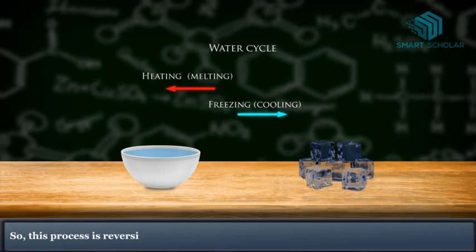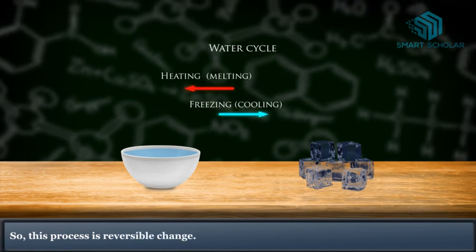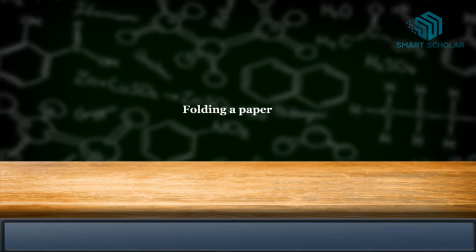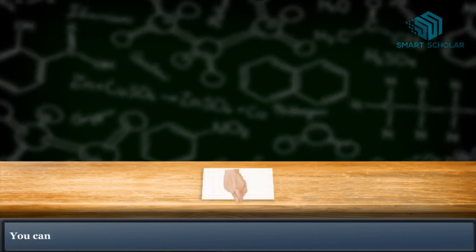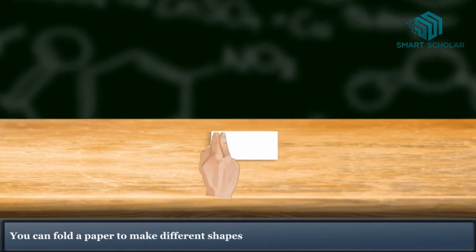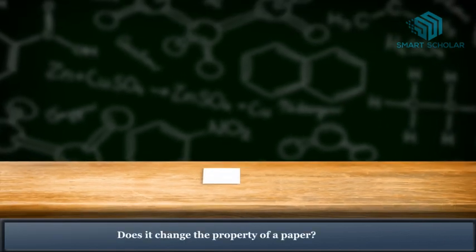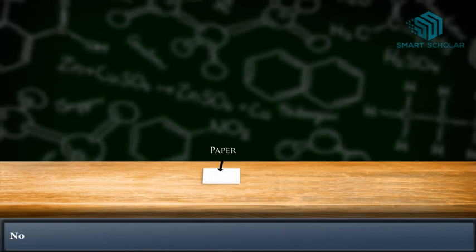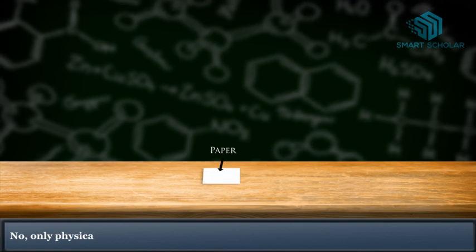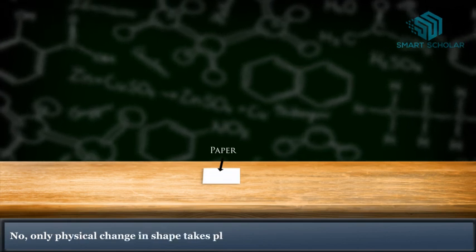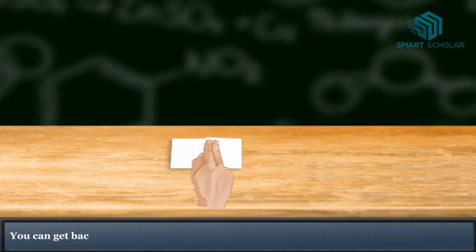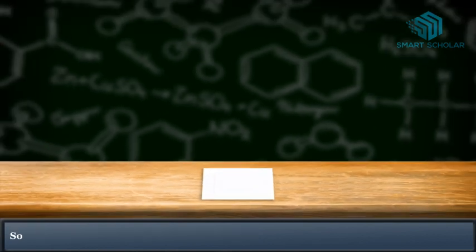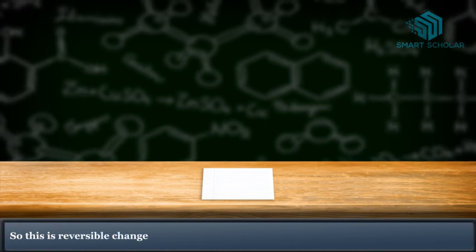Folding paper: You can fold a paper to make different shapes. Does it change the property of the paper? No, only a physical change in shape takes place. You can get back the original paper by unfolding, so this is a reversible change.